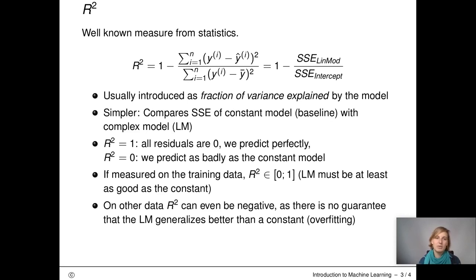The next measure we take a look at now is the R squared. This is a measure you might already know from a statistics context. In statistics, this is usually used with the training data and then interpreted as the fraction of variance explained by the model. What we actually do is we compare the sum of squared errors of a simple baseline model with a more complex model. In statistics, we use it with linear models.